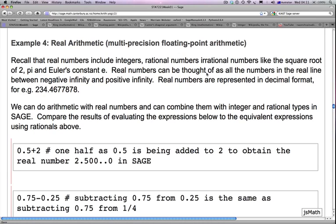Real numbers can be thought of as all the numbers in the real line between negative infinity and positive infinity, and real numbers are represented in decimal format. For example, 234.4677878 is an example of a real number. We can do arithmetic with real numbers and can combine them with integer and rational types in SAGE.